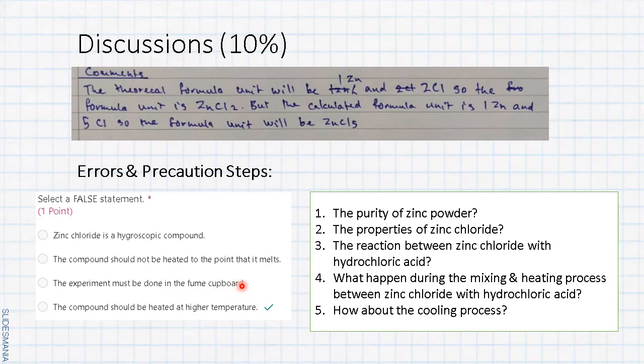You're trying to think a few questions for the error: the purity of zinc powder, the properties of zinc chloride, the reaction between zinc chloride with hydrochloric acid—is it completed? What happened during the mixing and heating process between zinc chloride with hydrochloric acid? And how about the cooling process? Is there any errors happen during these few steps? You must include this kind of error in your lab report.